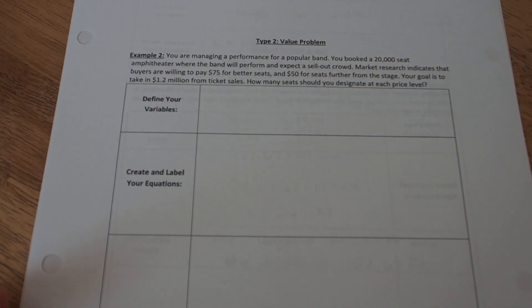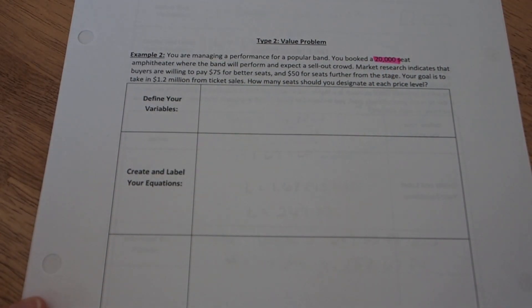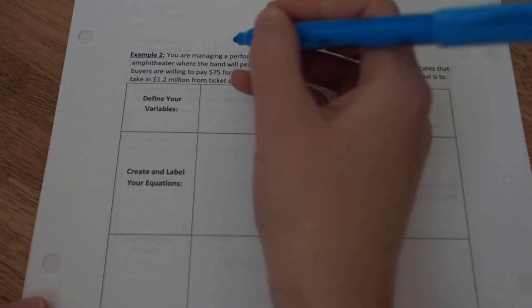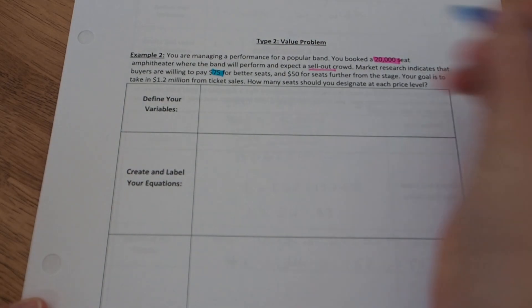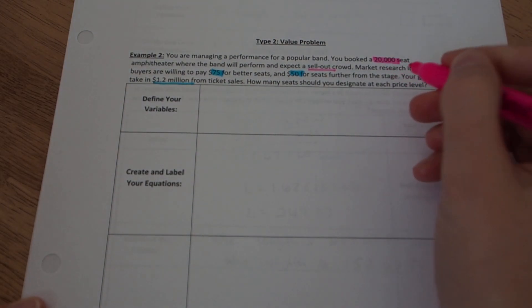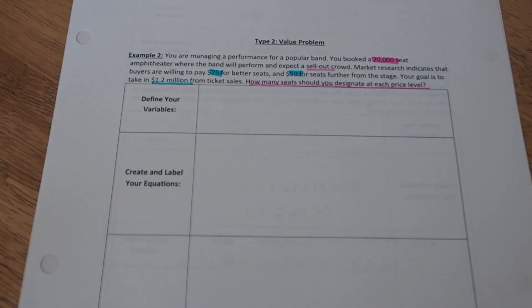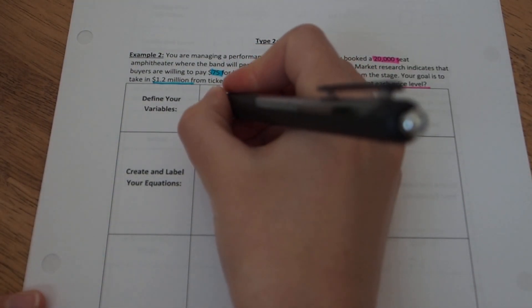Let's read through it real quick. We are managing a performance for popular band. We booked a 20,000 seat amphitheater where you're expecting a sellout crowd. Market research indicates that buyers are willing to pay $75 for the good seats and $50 for seats that are further from the stage. And our goal is to take in $1.2 million from ticket sales. So how many tickets should I designate at each price level? How many tickets at each price level is helping me decide what the variables need to be. I need to figure out how many for each price level.